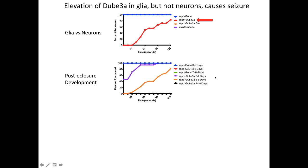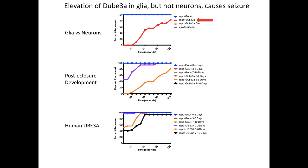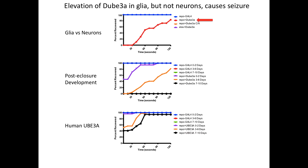We then looked developmentally in a short window after the flies came out of their pupal cases. This effect is not at its strongest right after eclosure. Flies that are zero to two days old show about 50% seizure susceptibility, which is important because it means this isn't fixed developmentally — it's accumulating over time. Three-to-six-day-old flies show more, and seven-to-ten-day-old flies actually have seizures and die. Something is ongoing after eclosure. We repeated these experiments using human isoform 2 — overexpressed in glial cells — and we see a seizure phenotype, recapitulating this in flies with human UBE3A.